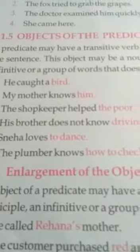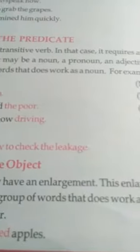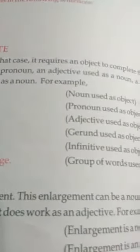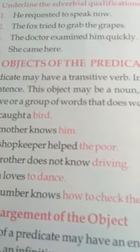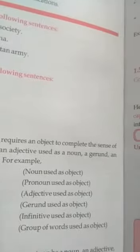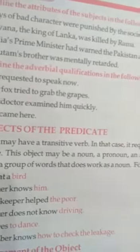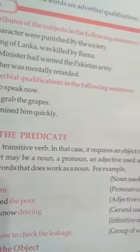Now here you can see objects of the predicate. A predicate may have a transitive verb. In that case, it requires an object to complete the sense of the sentence. This object may be a noun, a pronoun, an adjective used as a noun, a gerund and infinitive, or a group of words that does work as a noun.